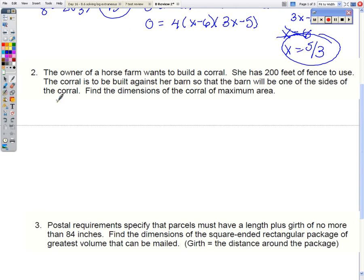Okay, so drawing number 2. Here's the barn. And here's the fence. I'm going to call these sides x and this side y. If she has 200 feet of fence to use, that means 2x plus y has to be the 200 feet of fence.